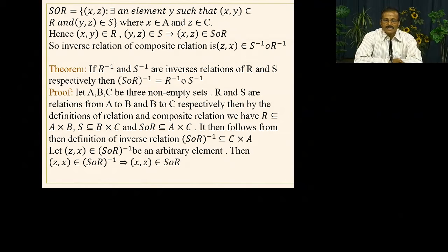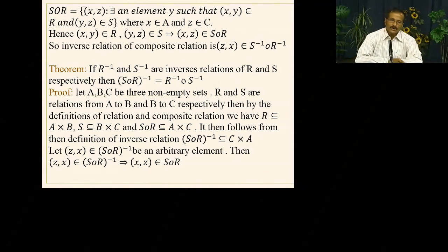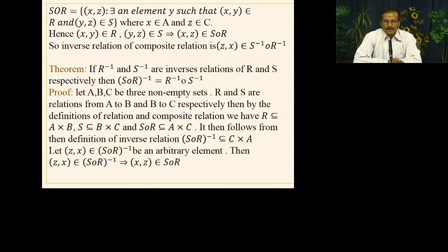Since (x, z) ∈ S∘R, naturally its inverse means domain and range interchange. If (x, y) ∈ R then (y, x) ∈ R-inverse. So (S∘R)-inverse gives us (z, x) which equals S-inverse∘R-inverse. This is an important theorem called the Reversal Rule: (S∘R)-inverse = R-inverse∘S-inverse. When we take the inverse of a composite of two relations, we reverse the order and take inverses individually.